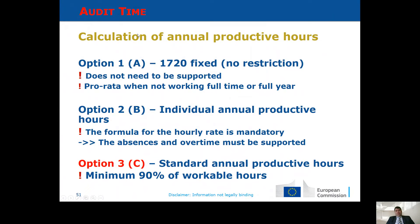In the CFS you will see options labeled ABC, while in the grant agreement they are referred to as options 123 — here are both types of wording. Some comments on productive hours: Option A does not need to be supported and can be used freely, with a pro-rata applied when someone is not working full-time or the full year. For individual annual productive hours (Option B), the formula is mandatory — you cannot add or deduct items beyond absences and overtime, and this must be supported. It is not allowed to apply something like Option C at the individual level — this is part of the simplification measures for Horizon 2020.